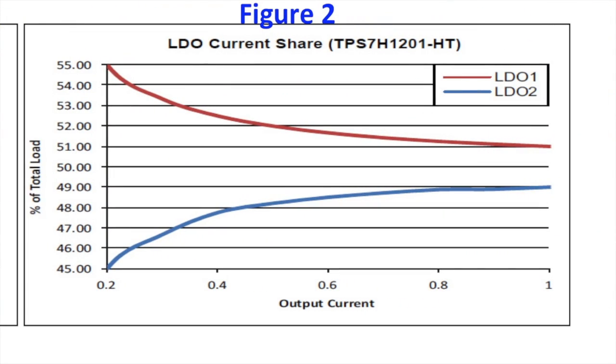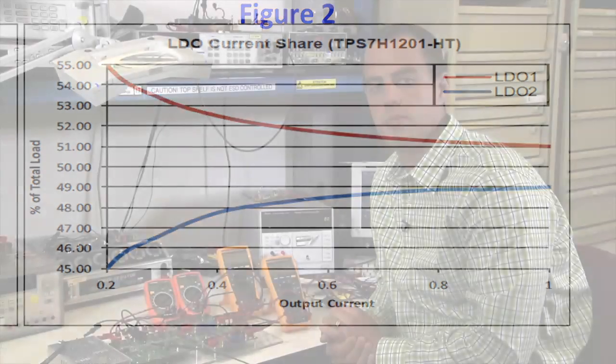Figure two shows the percent of load current for each device versus the total output current for the TPS7H1201-HD. At a half an amp output current the device's current share within two percent up to one amp.